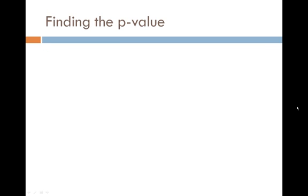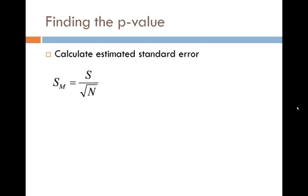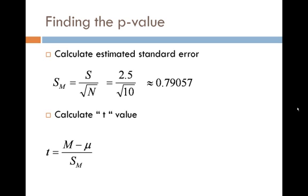Now comes the really important part, where we start really using our formulas. This is where we start to find our p-value. To start this process, first we calculate the estimated standard error. In case you forgot that formula, here it is one more time. In that formula, we'll put in our sample standard deviation and our sample size. After doing so, I computed a value around 0.79057. Now with this value, we're going to use it as we calculate our t-value. Here's that formula, and into it I've put our sample mean, the hypothesized population mean, and the estimated standard error.